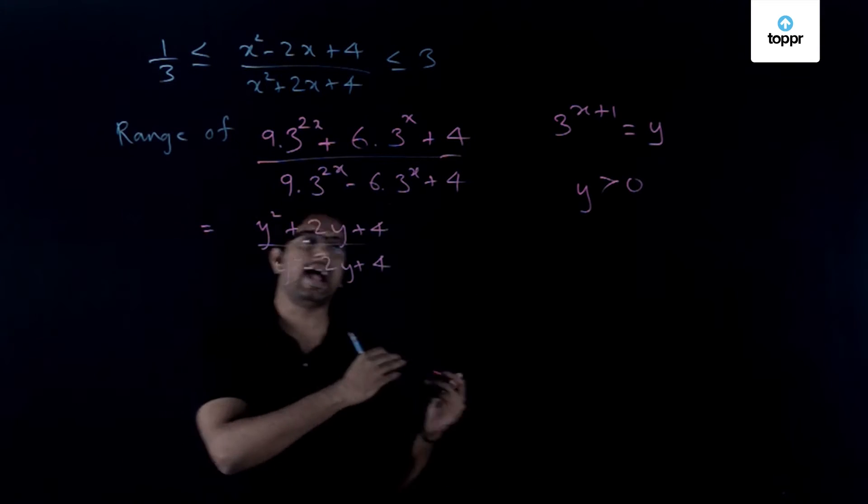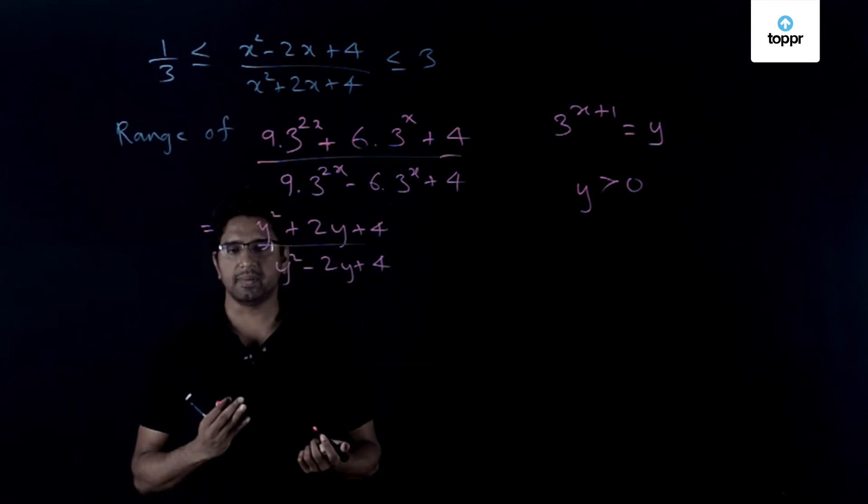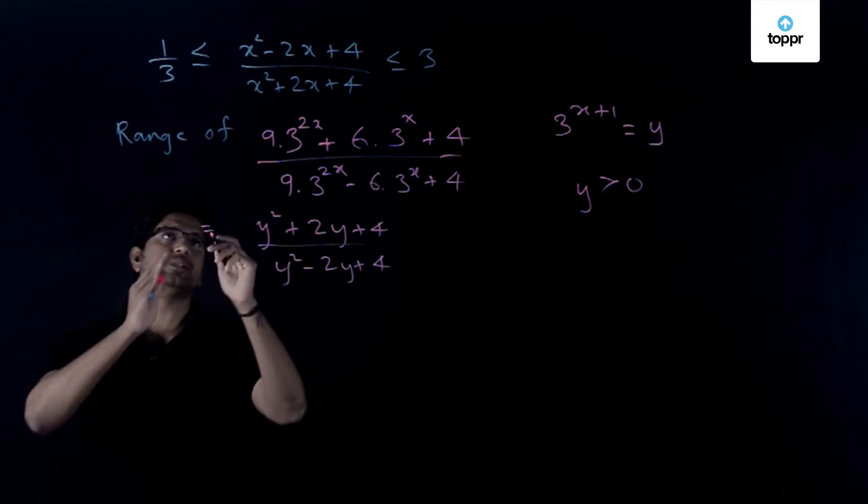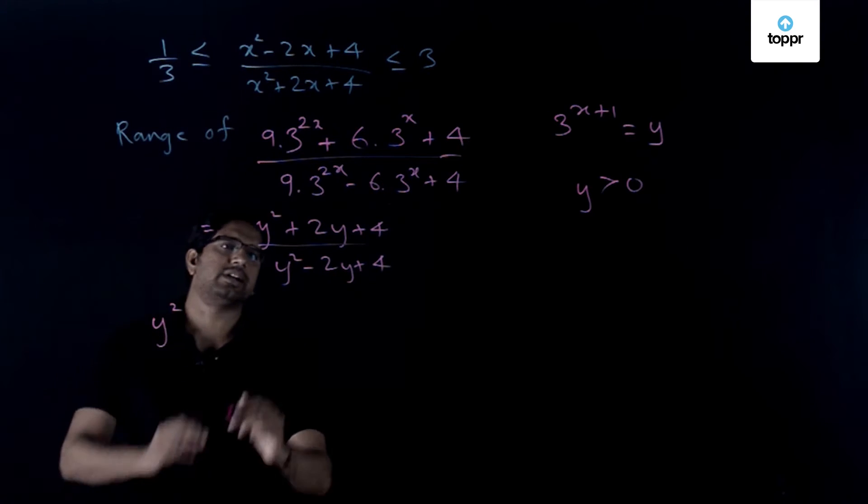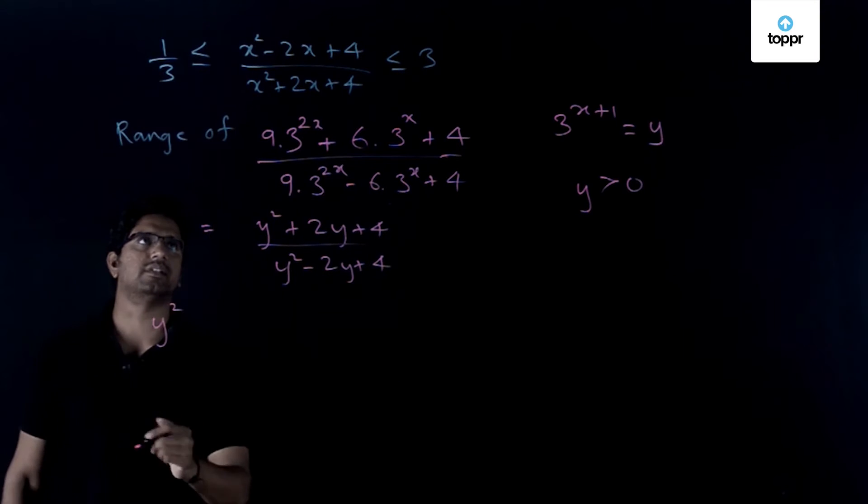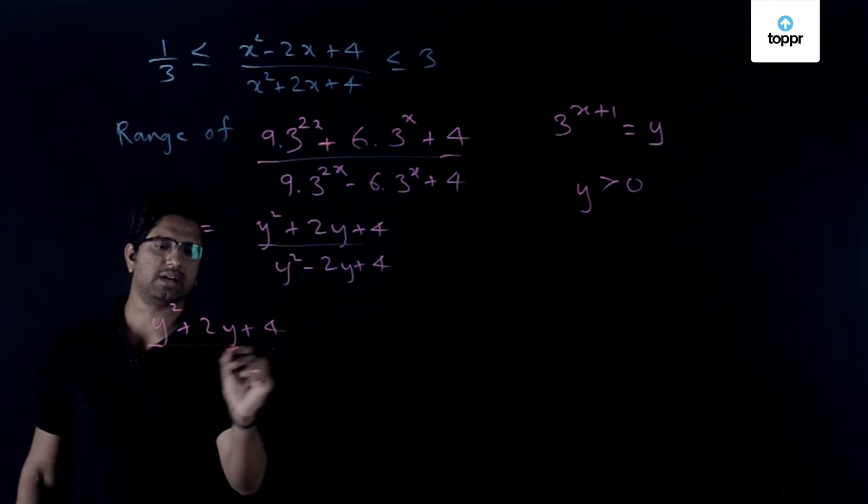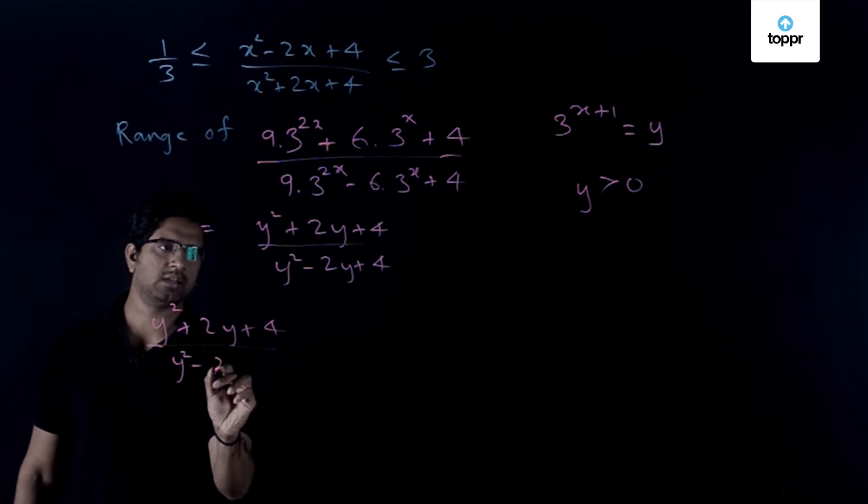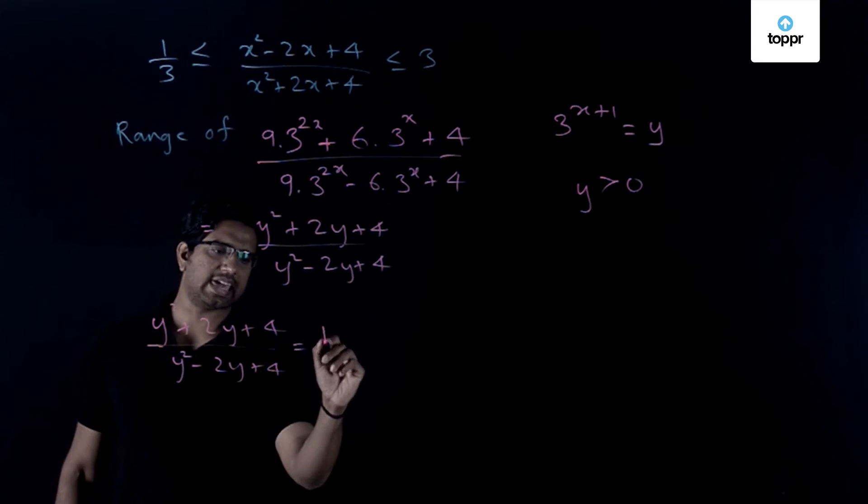That is one another added condition which we have in this case. So what that means is we actually need to compute the value of y². So let us compute what is the value of this thing itself. So y² + 2y + 4 divided by y² - 2y + 4, let its value be equal to k.